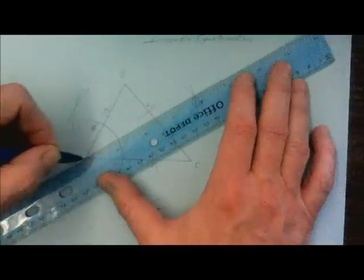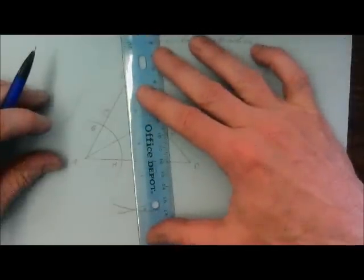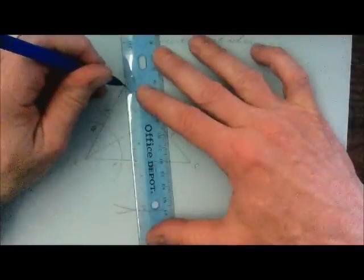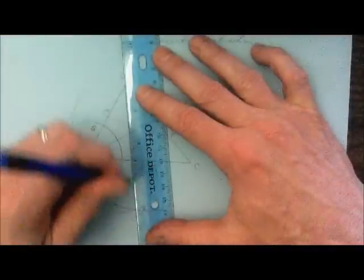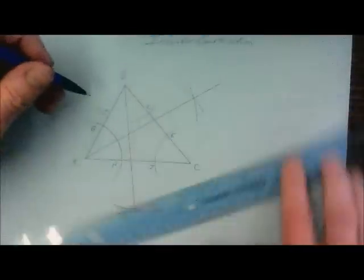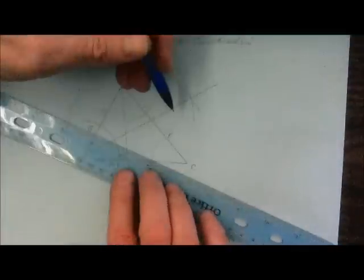So there we have the bisector of A, and then very neatly the bisector of B, and then the bisector finally of angle C.